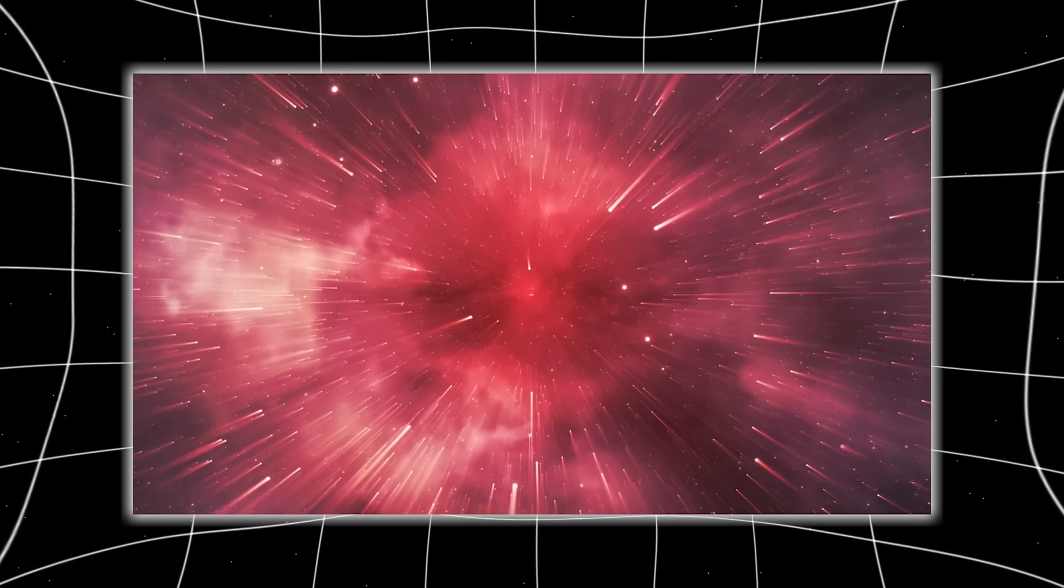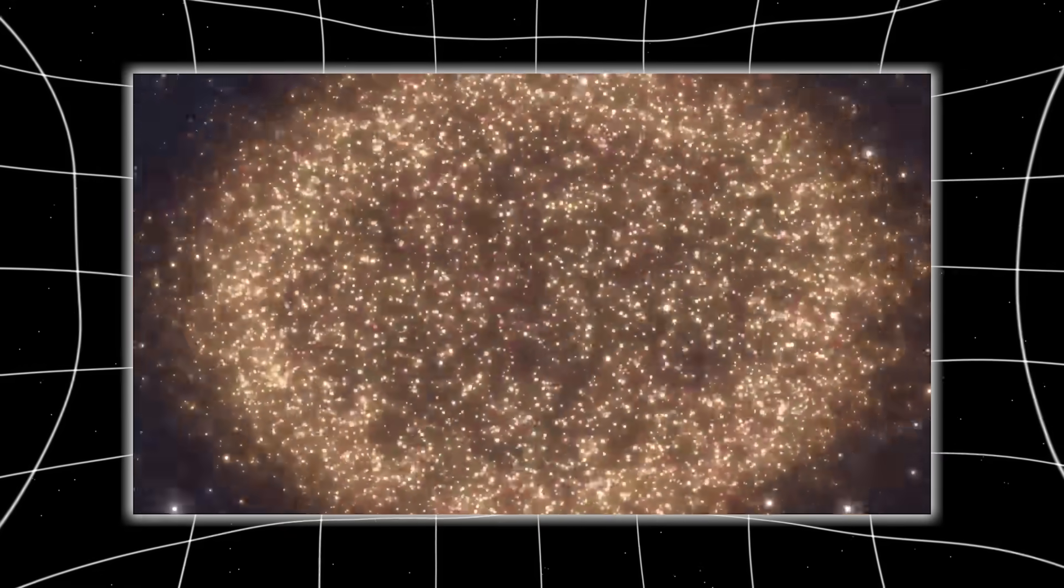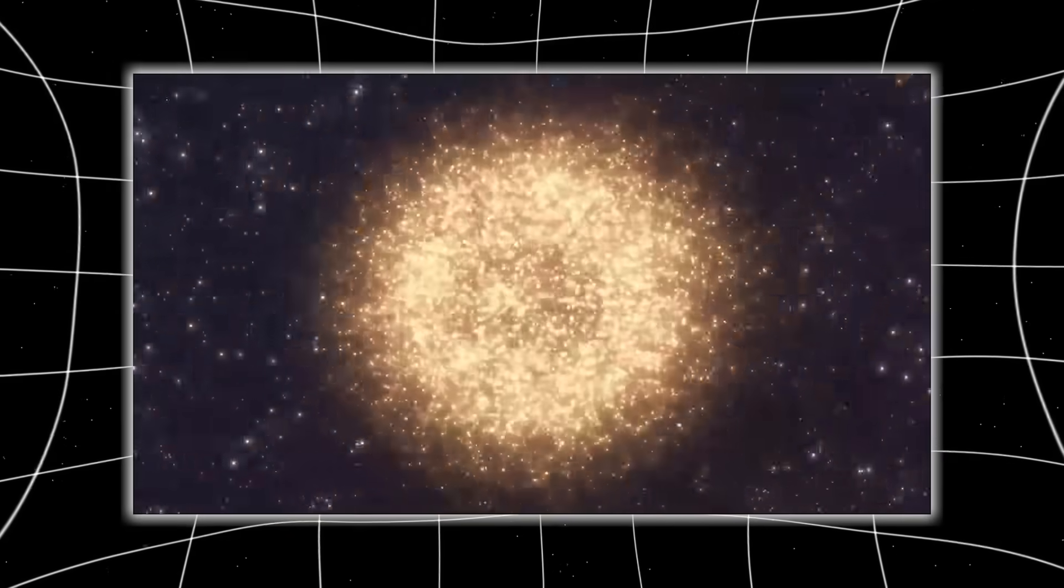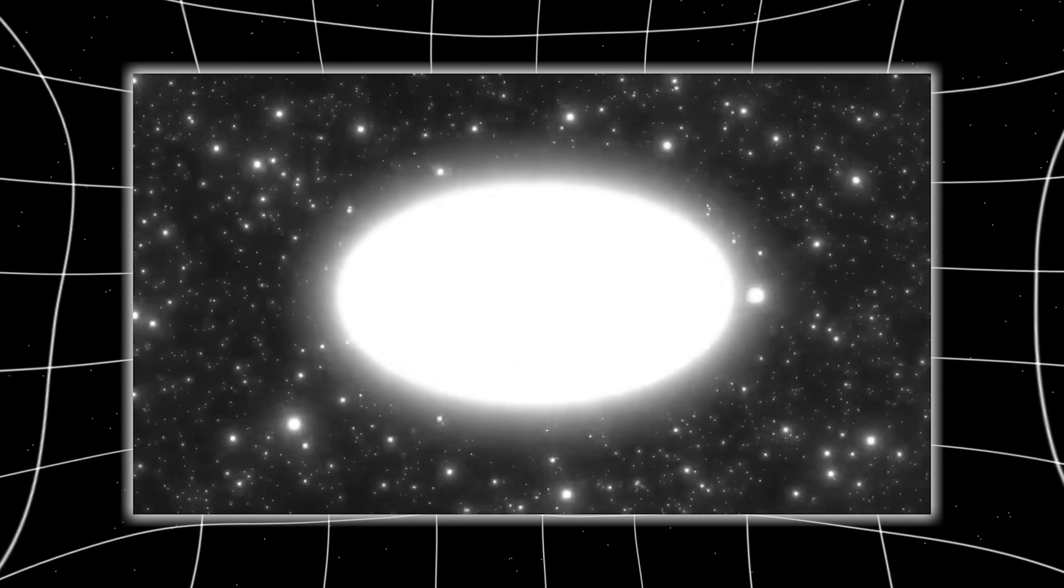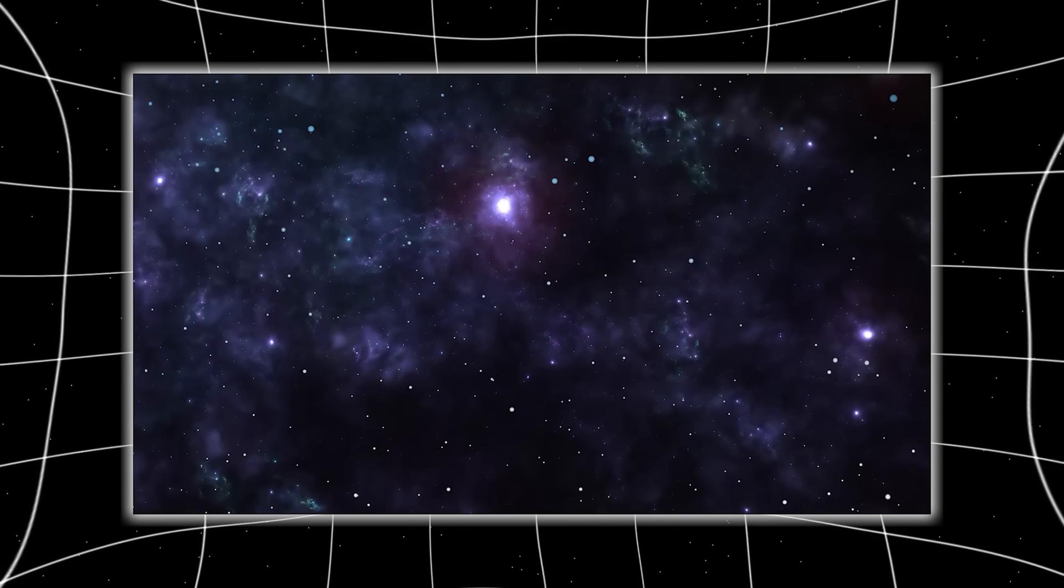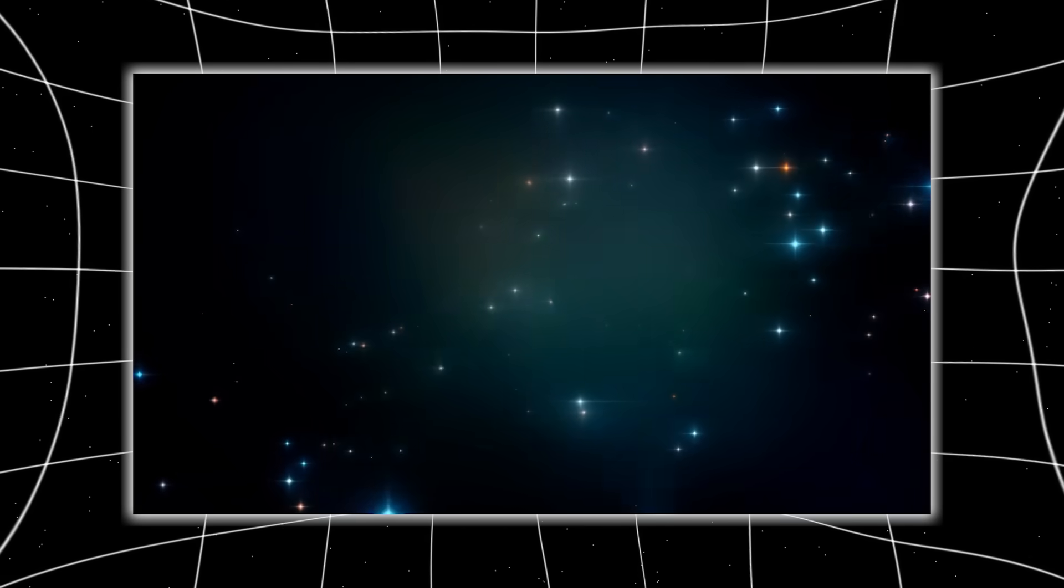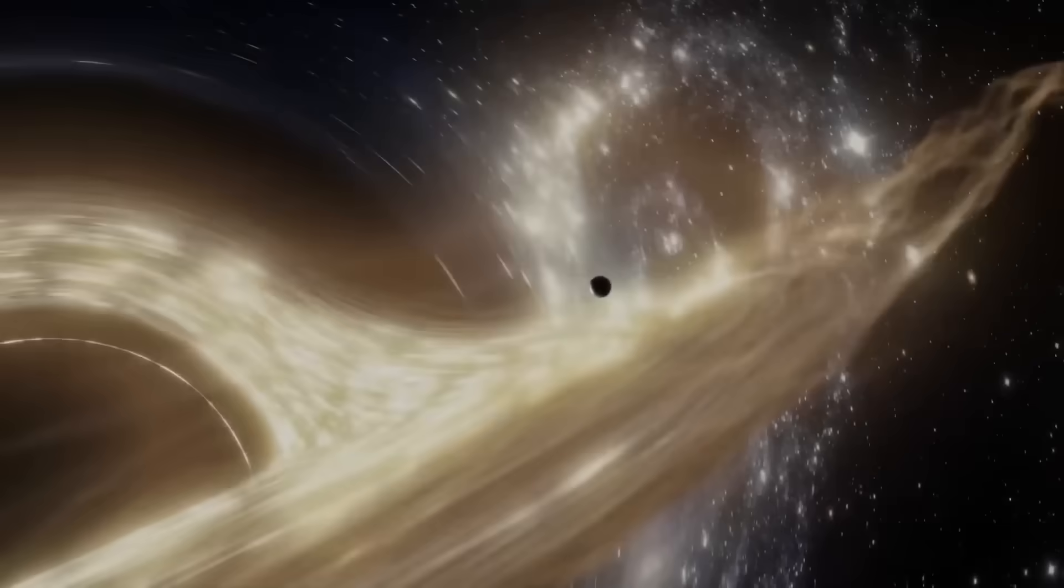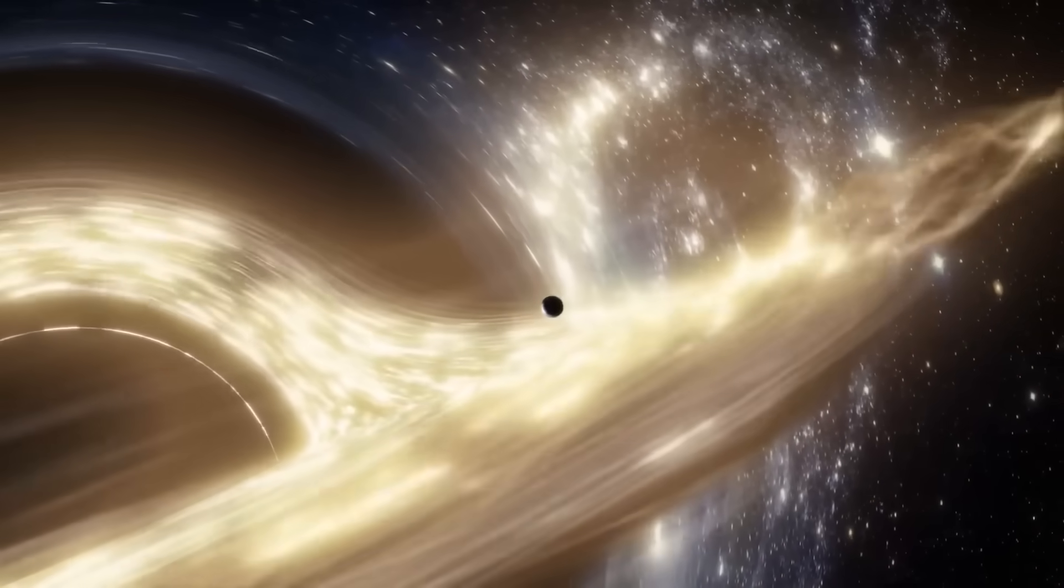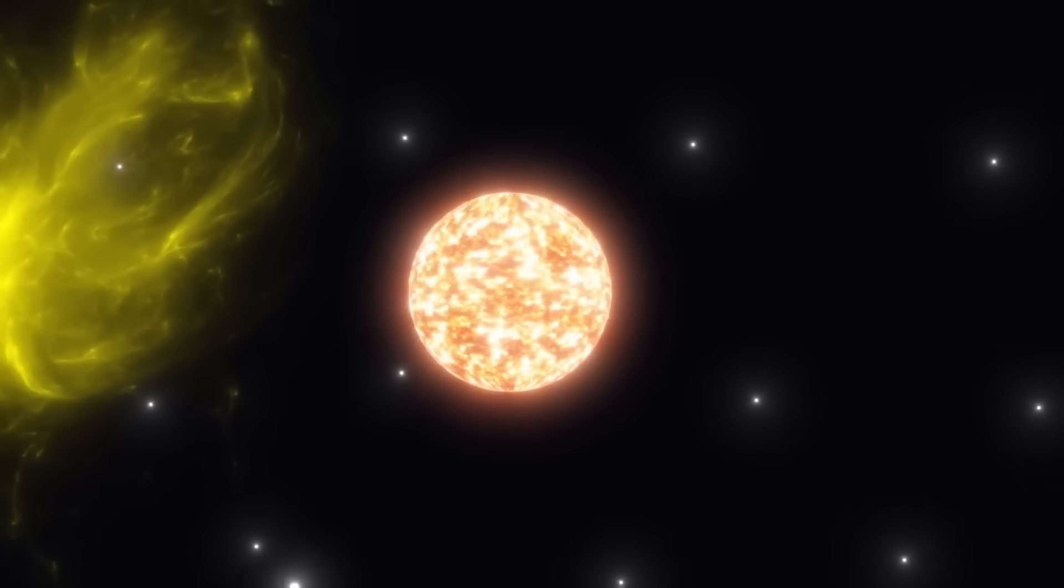A faint pulse embedded in the fabric of space itself. The coordinates led scientists to a region behind the Hercules-Corona Borealis Great Wall, one of the largest known structures in the cosmos. There, hidden in a void that should have been empty, Webb's instruments caught a glow, faint, symmetrical, and alive with impossible geometry. What the telescope captured next made astronomers question everything they knew about physics, time, and the shape of our universe.